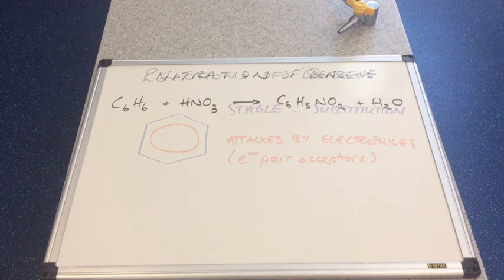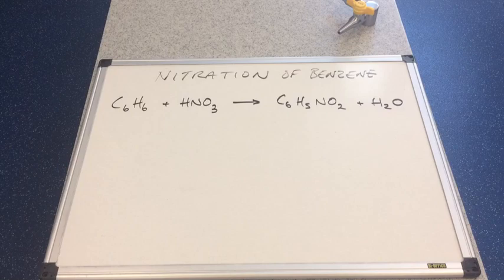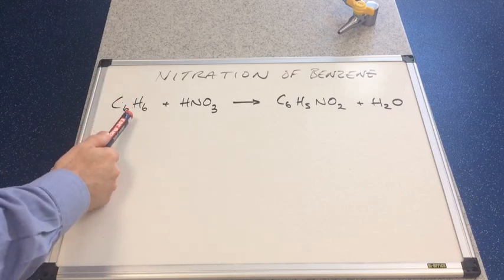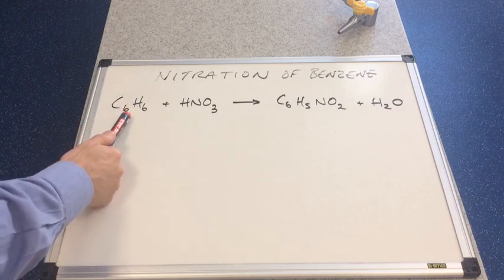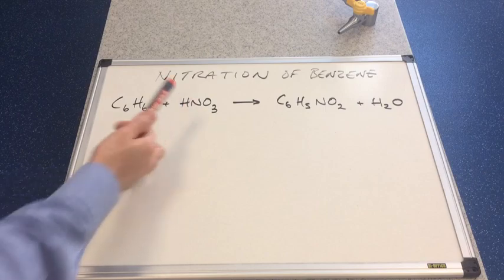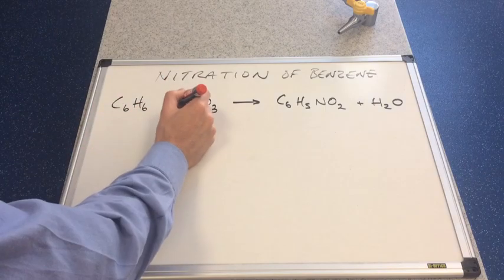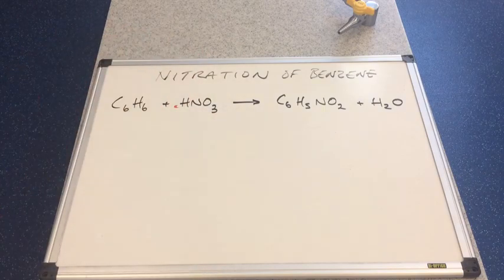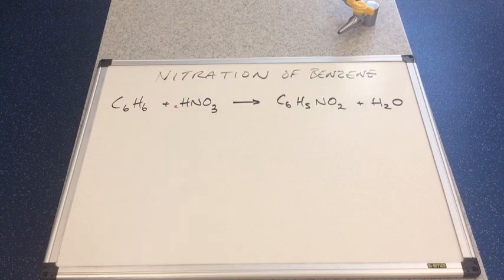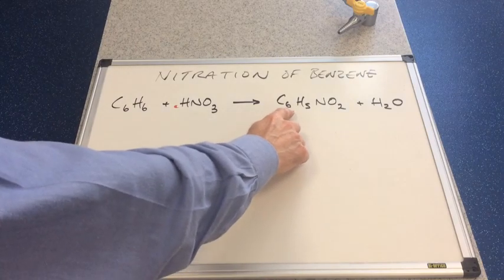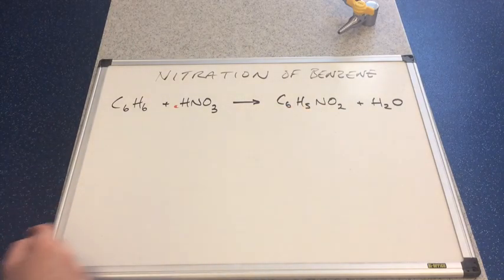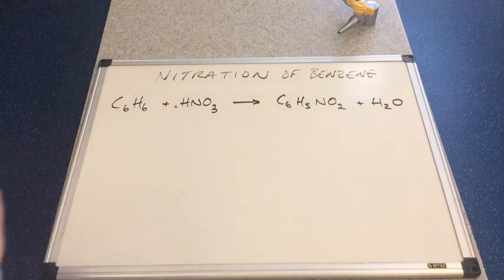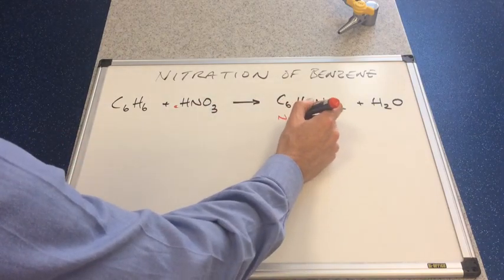The first reaction we'll look at is the nitration of benzene. You've got the equation here, this is benzene and when it reacts with nitric acid, normally concentrated nitric acid, it will produce C6H5NO2, nitrobenzene, and water.